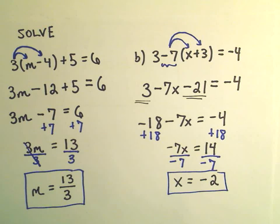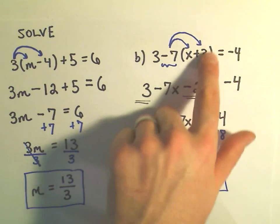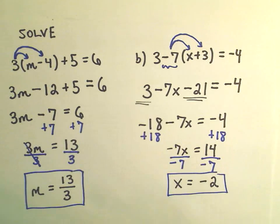And again, you could always check that if you plug negative 2 back inside of here, that when you do all the arithmetic on the left-hand side, you do, in fact, get negative 4 as our solution.